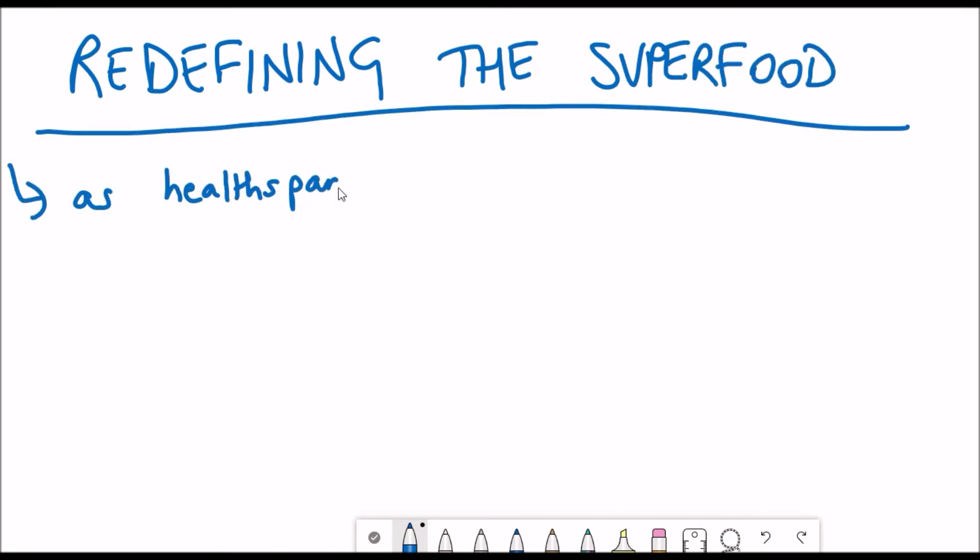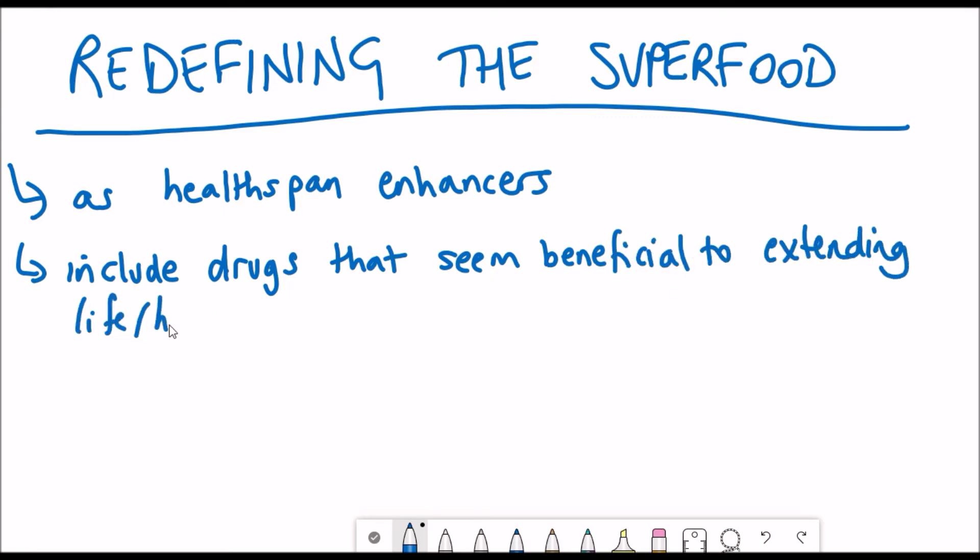Redefining superfoods as health span enhancers would require the addition and tinkering of crop components to achieve this, followed by substantial testing of their efficacy to gain scientific approval.